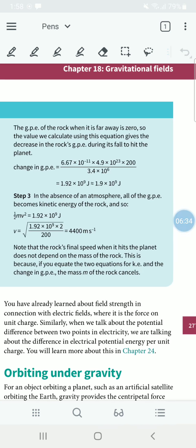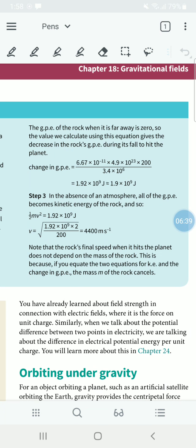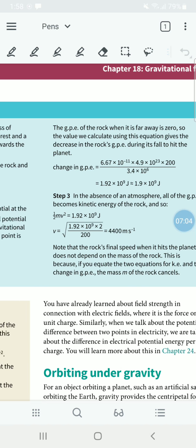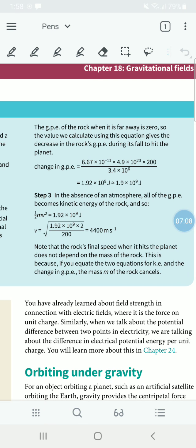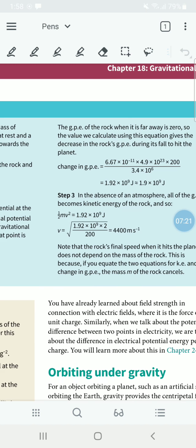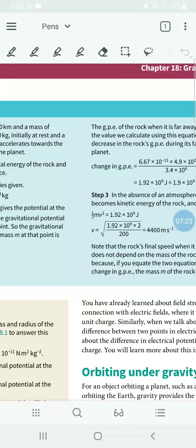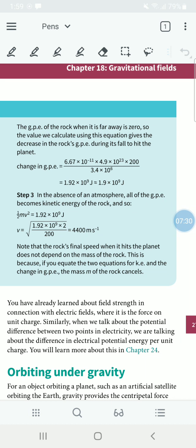The GPE of the rock at infinity is zero, so the change in GPE would reduce when it comes closer. The change in GPE is G × M × m. G is 6.67 × 10^-11, the mass of the planet is 4.9 × 10^23, mass of the rock is 200 kilograms, divided by r. They have given the diameter to be 6800 kilometers, so you divide it by 2 to get the radius: 3.4 × 10^6. Then you get 1.9 × 10^9 joules.